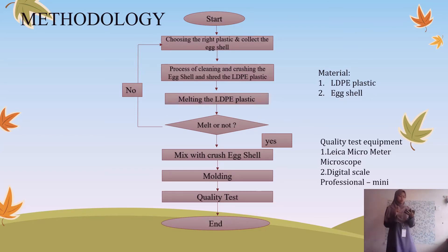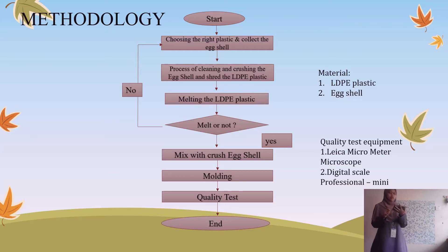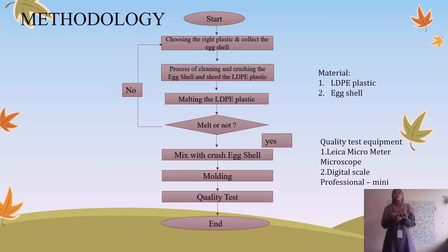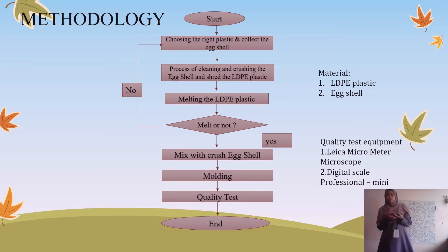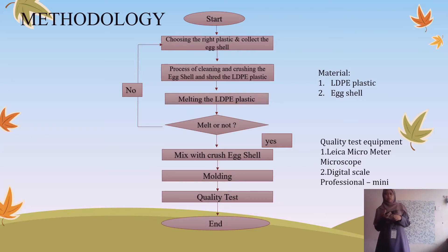If it does not melt, we go back to the first step. For the materials, we use LDPE plastic and egg shell. The quality test equipment includes a lens scale micrometer, microscope, and digital scale professional.